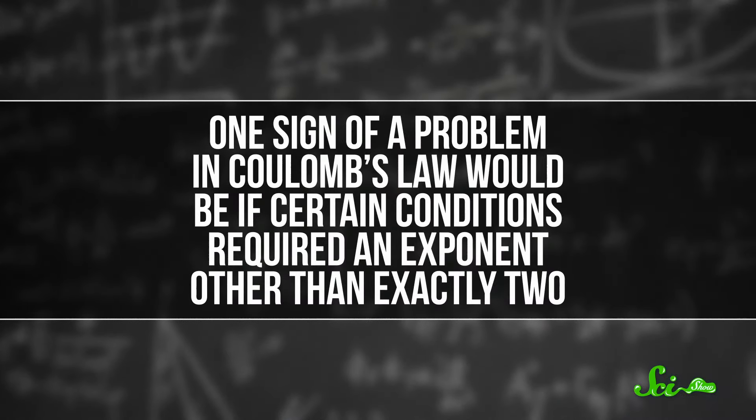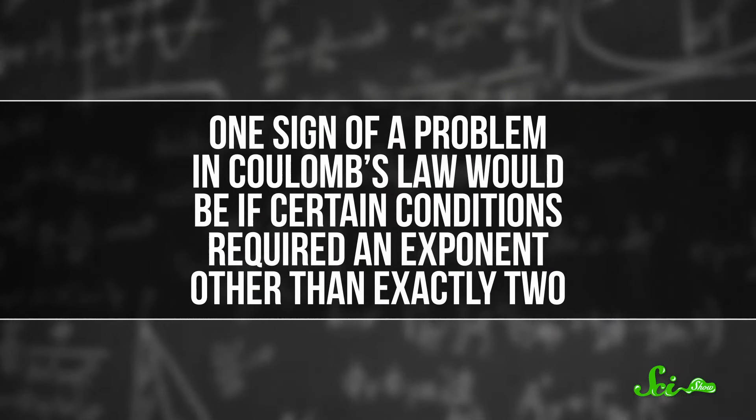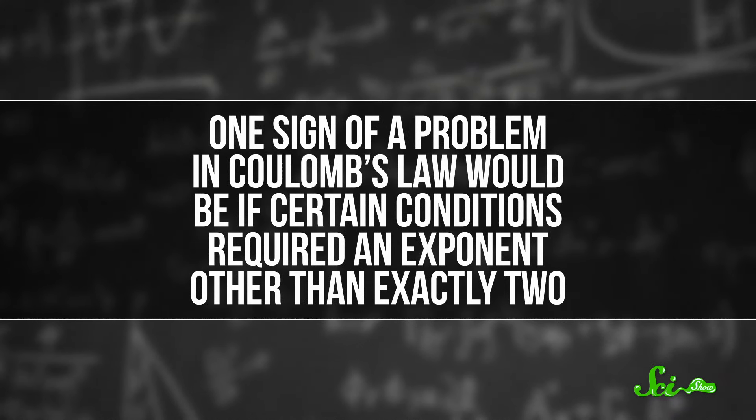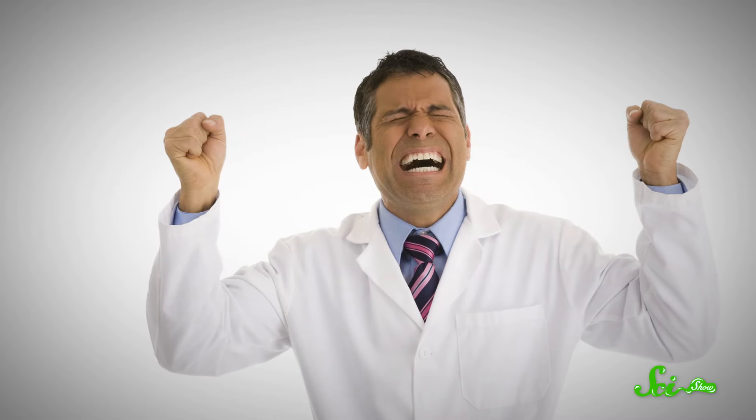Like what happened with Mercury, one sign of a problem in Coulomb's Law would be if certain conditions required an exponent other than exactly 2. That could be a sign that the whole formula needs an overhaul.